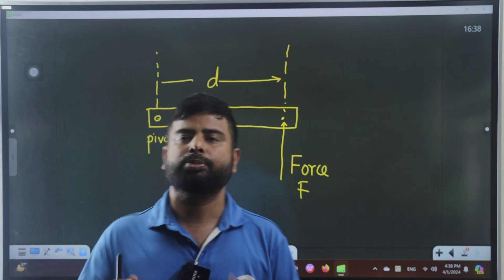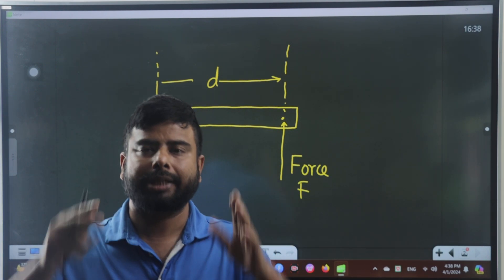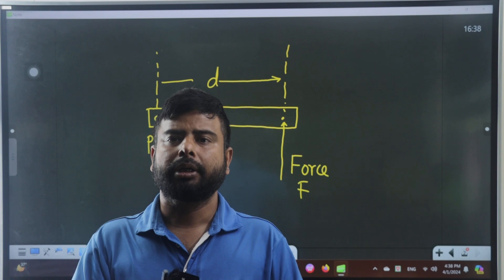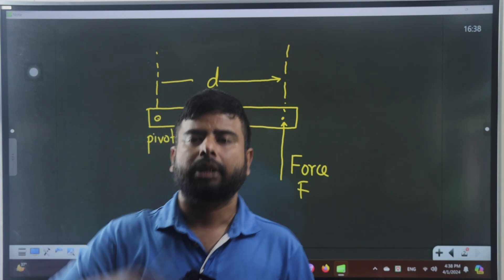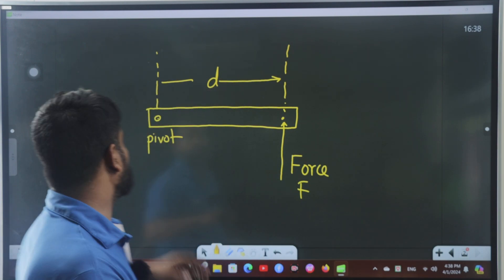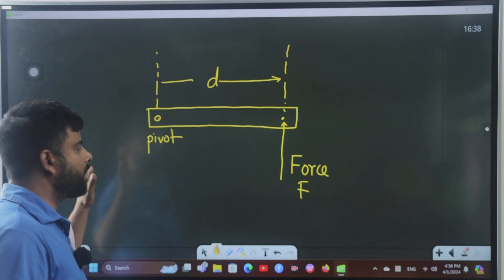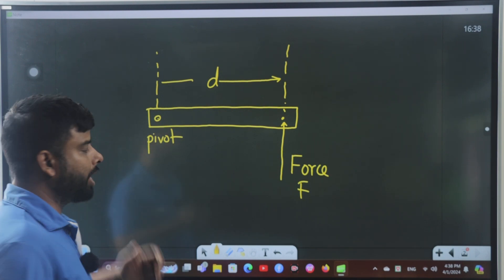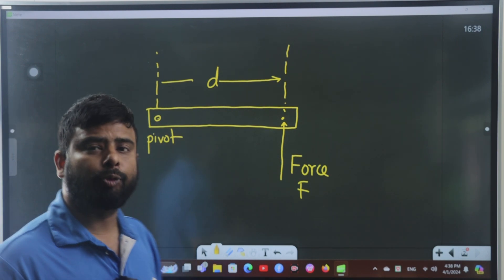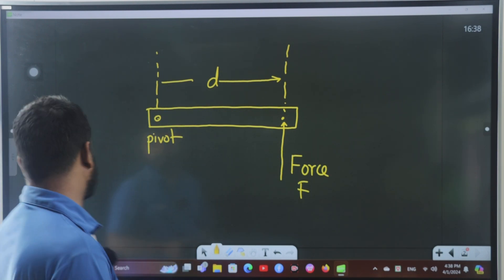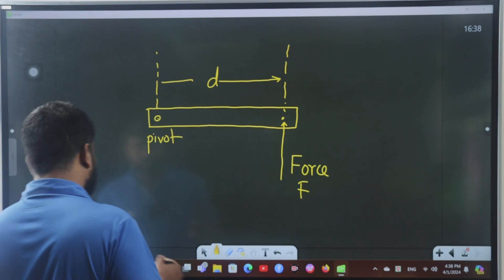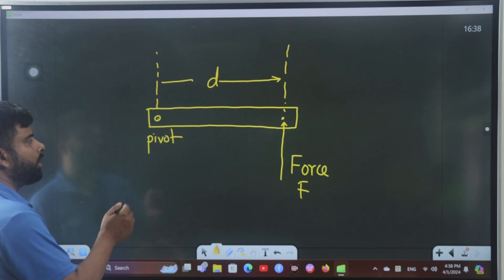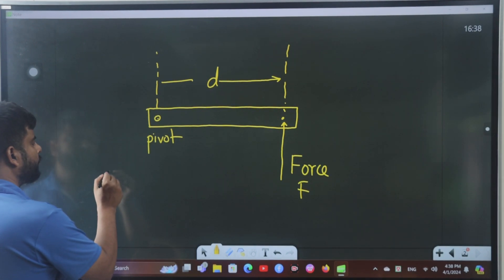When a force is applied on an object at a point away from its center, it causes the object to rotate. This is called the turning effect of force, which is also known as moment.